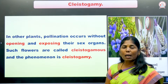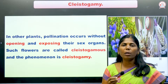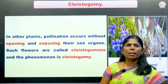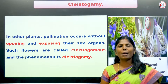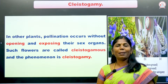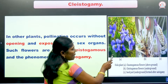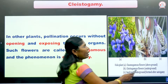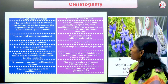In other plants, pollination occurs without opening or exposing the sex organs. These are closed flowers — pollination takes place inside the bud. That is known as cleistogamy. The androecium and gynoecium are not exposed; everything is in a closed condition. Such flowers are called cleistogamous flowers. Cleistogamous flowers consist of aerial flowers and underground flowers.